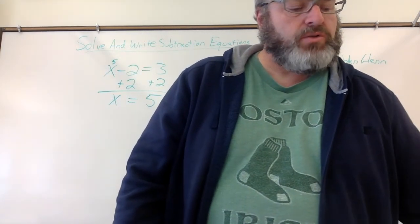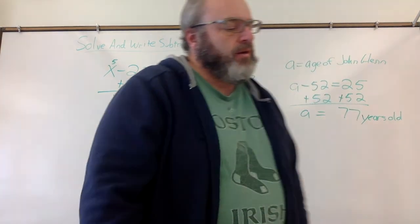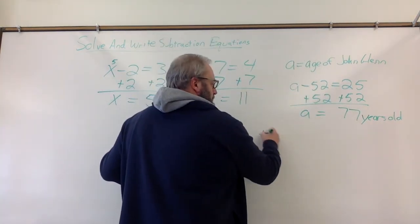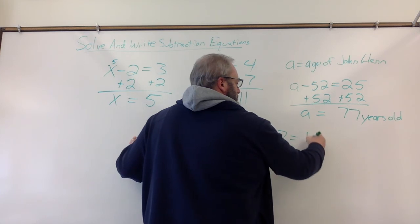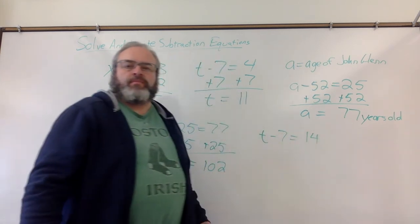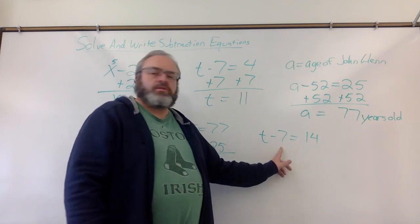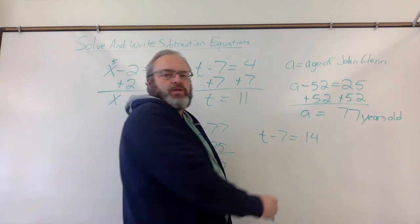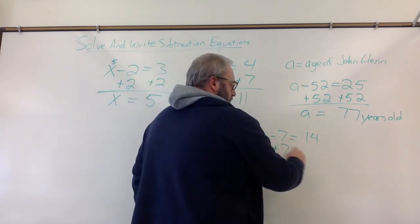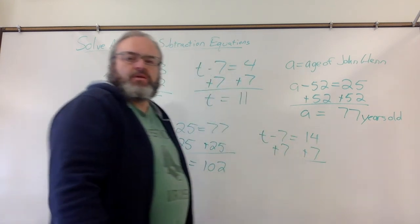All right. Let's just do a quick recap. If we have something like this, T minus 7 equals 14. How do we figure out what T is? We do the opposite of subtracting 7 to both sides. Add 7 and add 7.